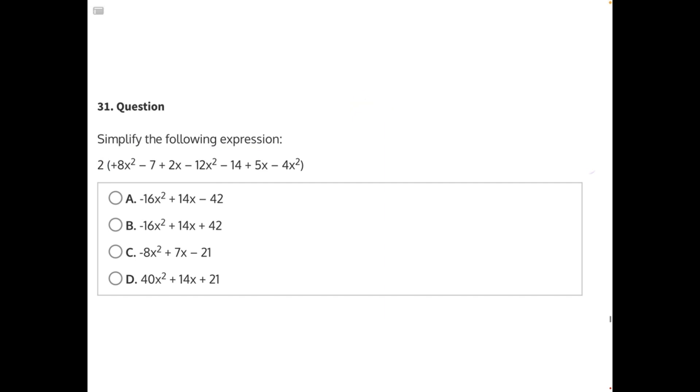Let's start from left to right. We will start with our x squared like terms. So anything that has an x squared attached to it, we can combine those because they are like terms. 8x squared, negative 12x squared, and negative 4x squared.